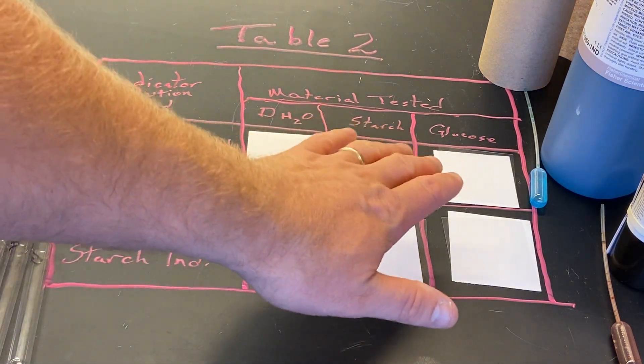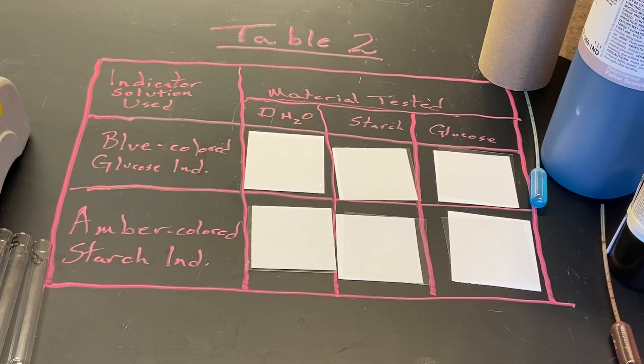Each of these little squares has a white piece of paper with plastic film over it so it doesn't soak in and affect our results. We're going to start with the blue colored indicator solution for glucose, sometimes called Fehling's solution or Benedict's solution.